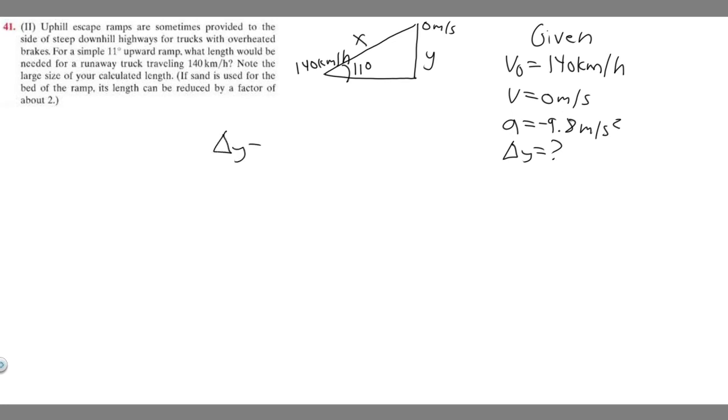So the equation we're going to use is v squared equals v sub 0 squared plus 2a times delta y. This is our equation we're going to use, and we just got to plug in our values. But first, we have to convert 140 kilometers per hour into meters per second, because all these units are meters per second squared. So we got to convert this into meters per second.